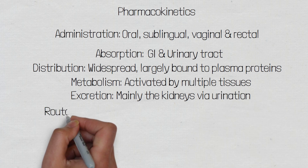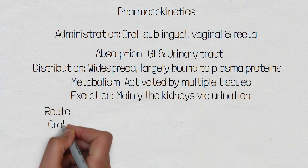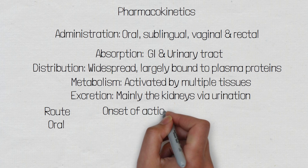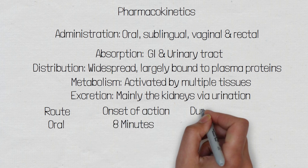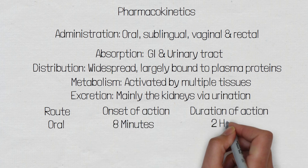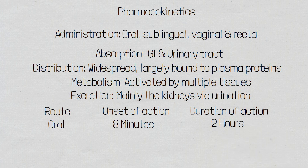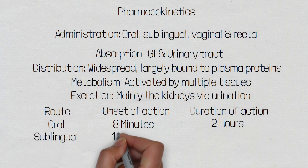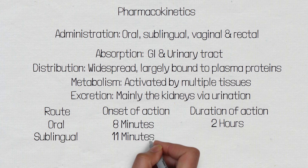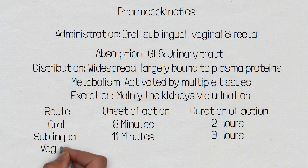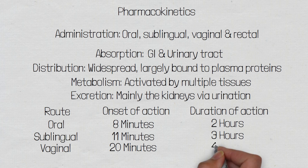An oral dose of misoprostol has an 8-minute onset of action and a duration of action of approximately 2 hours. A sublingual dose has an 11-minute onset of action and a duration of approximately 3 hours. A vaginal dose has about a 20-minute onset of action and a duration of approximately 4 hours.